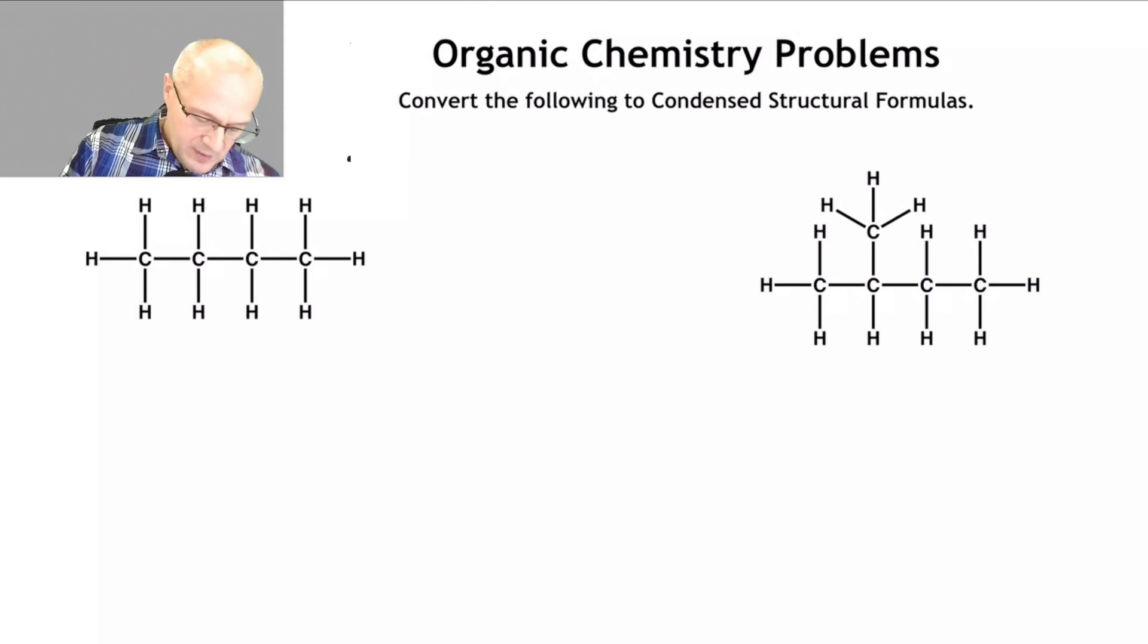And how do you do that? Well, we're going to start basing things on groups. And how do you group things? How I tell students to do it is imagine a dotted line between every carbon to carbon bond, just like this. And start breaking things into groups.